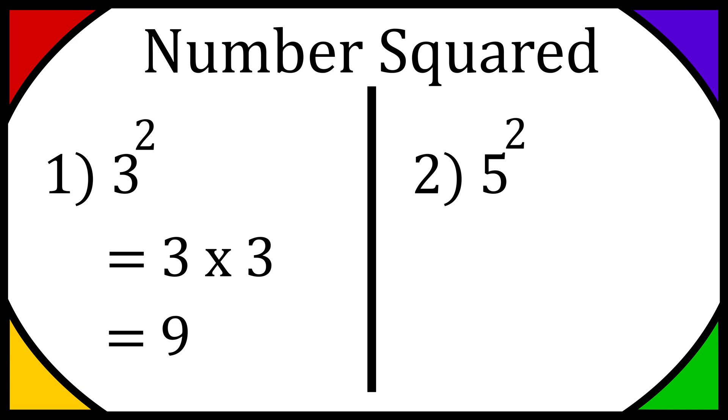So question number two, we have five squared. That's going to be equal to five times itself, so five times five, and that's going to be equal to twenty-five.